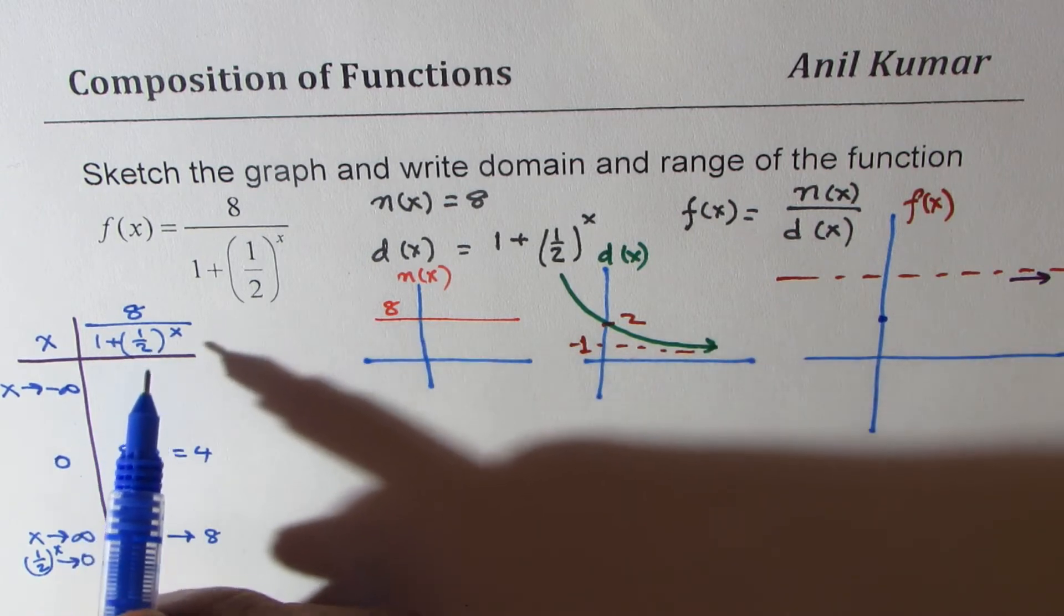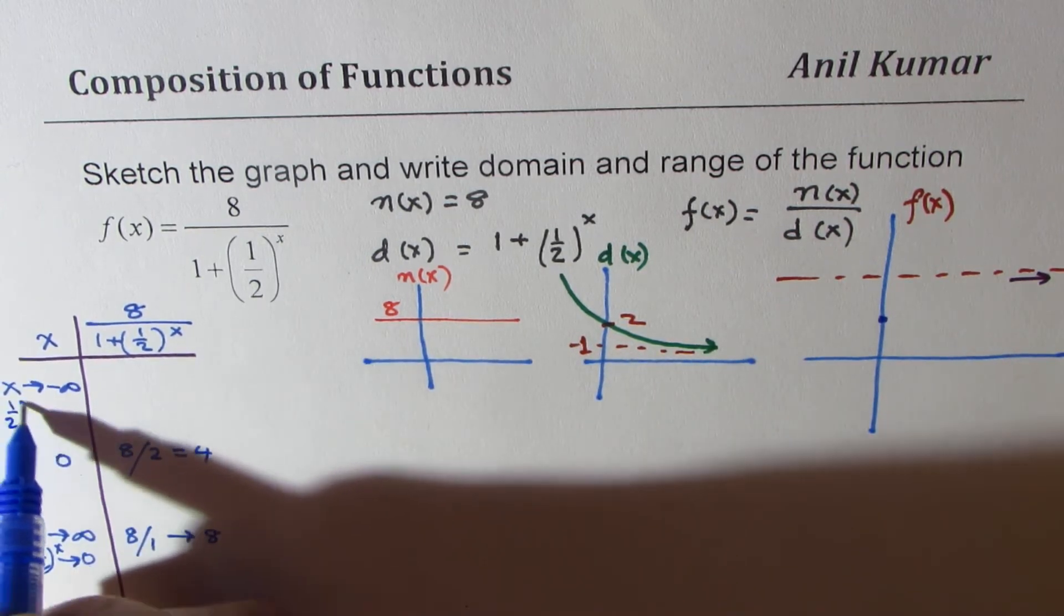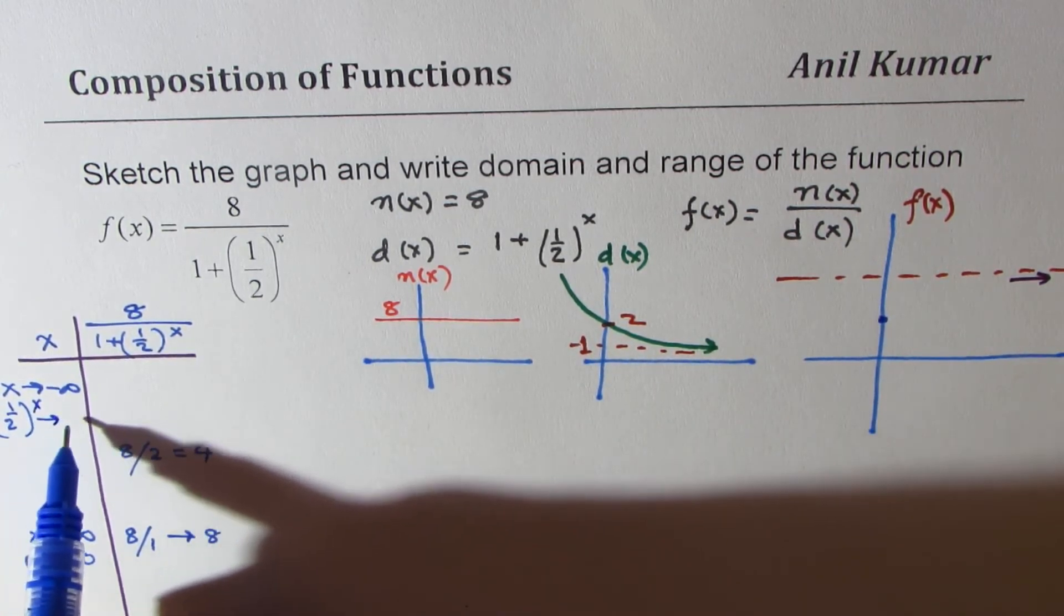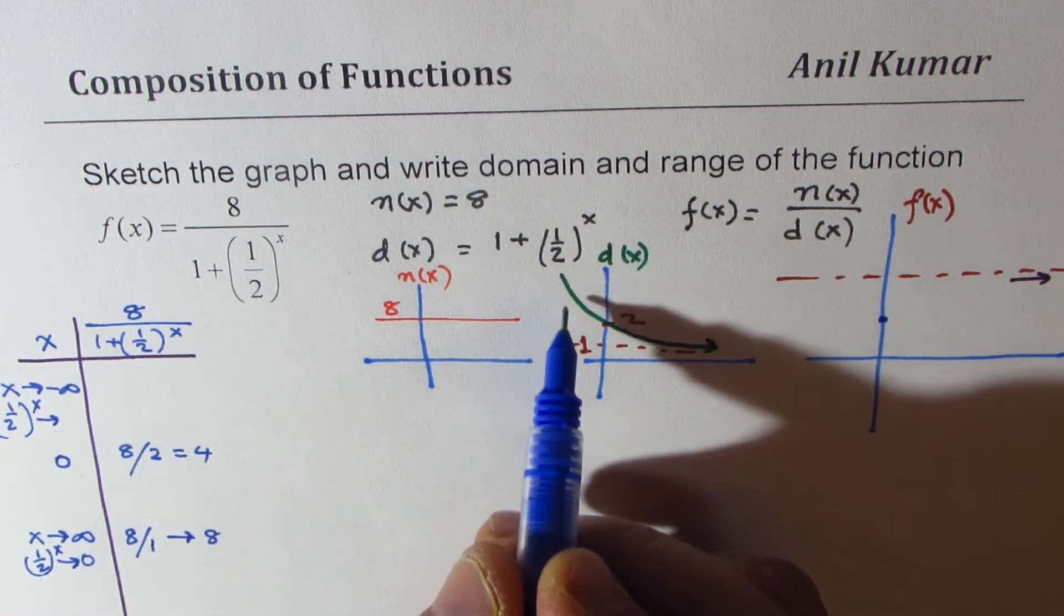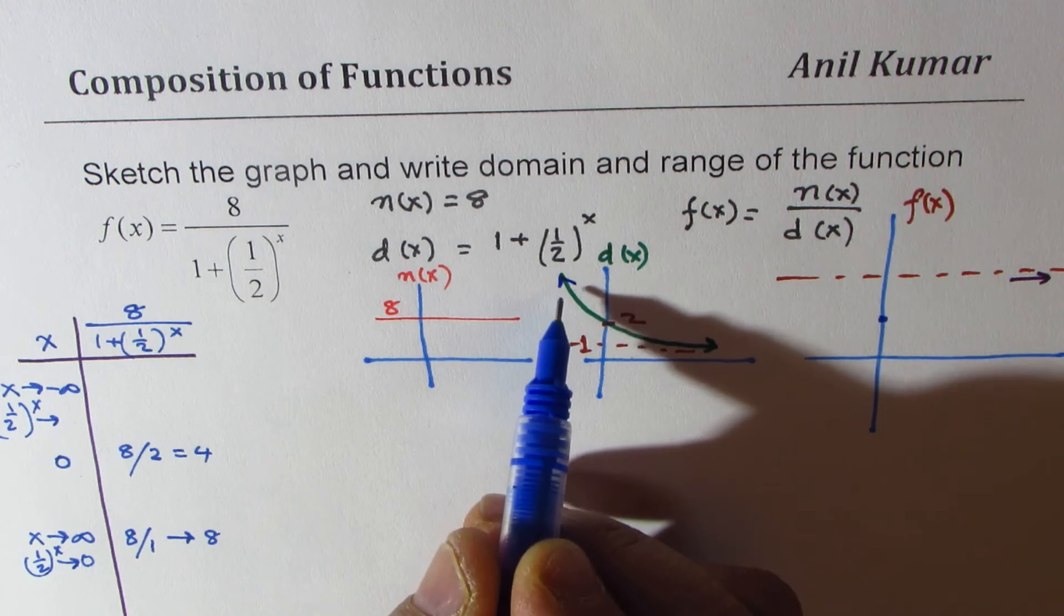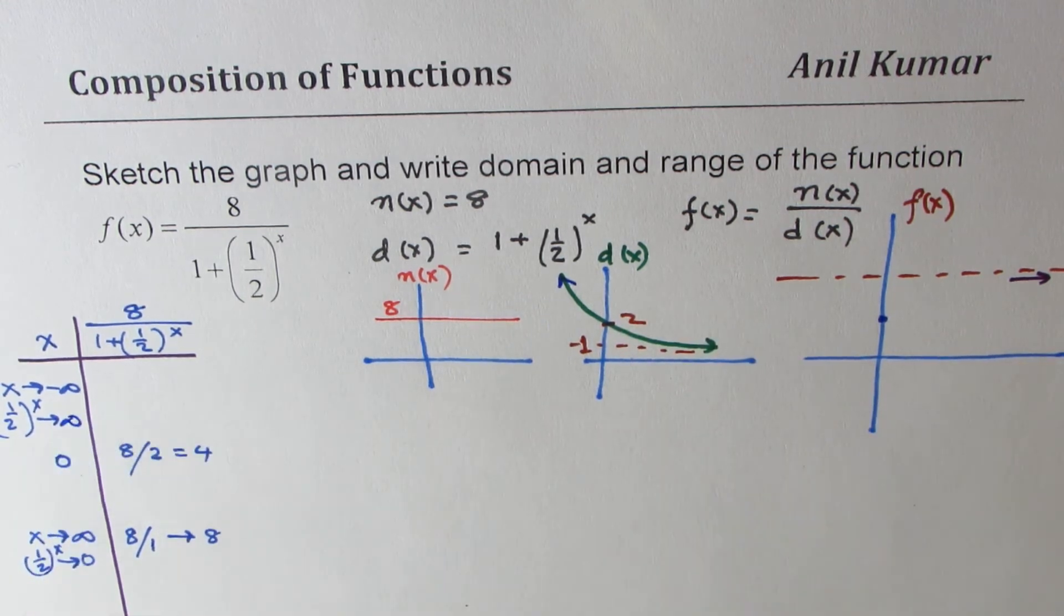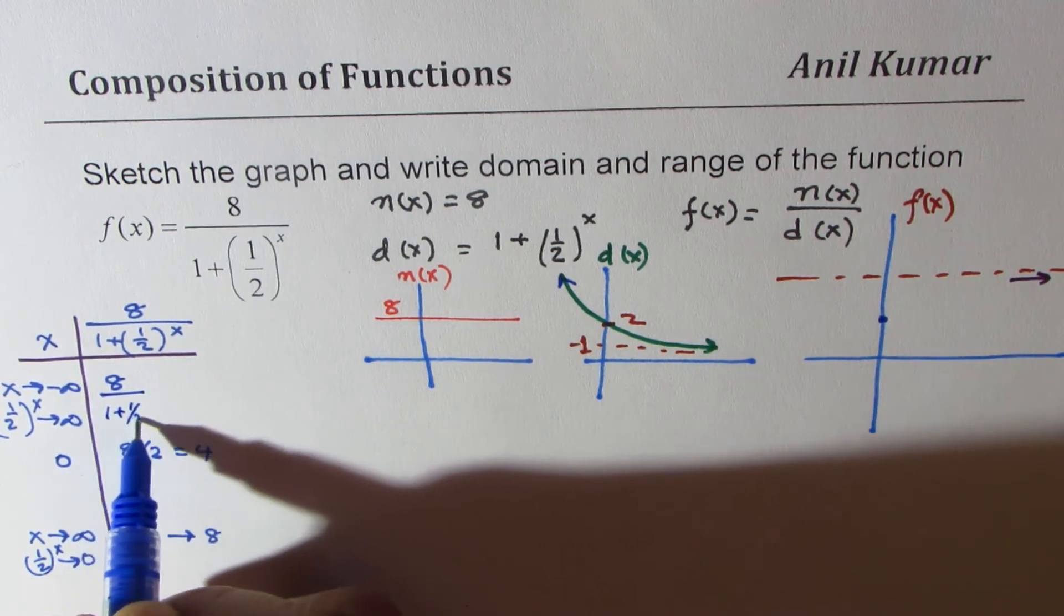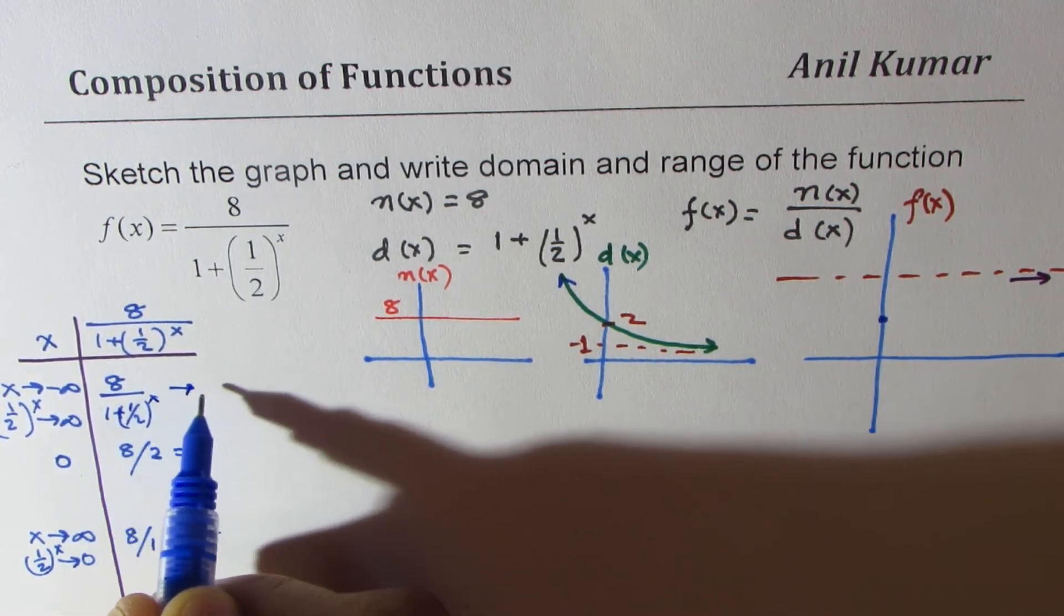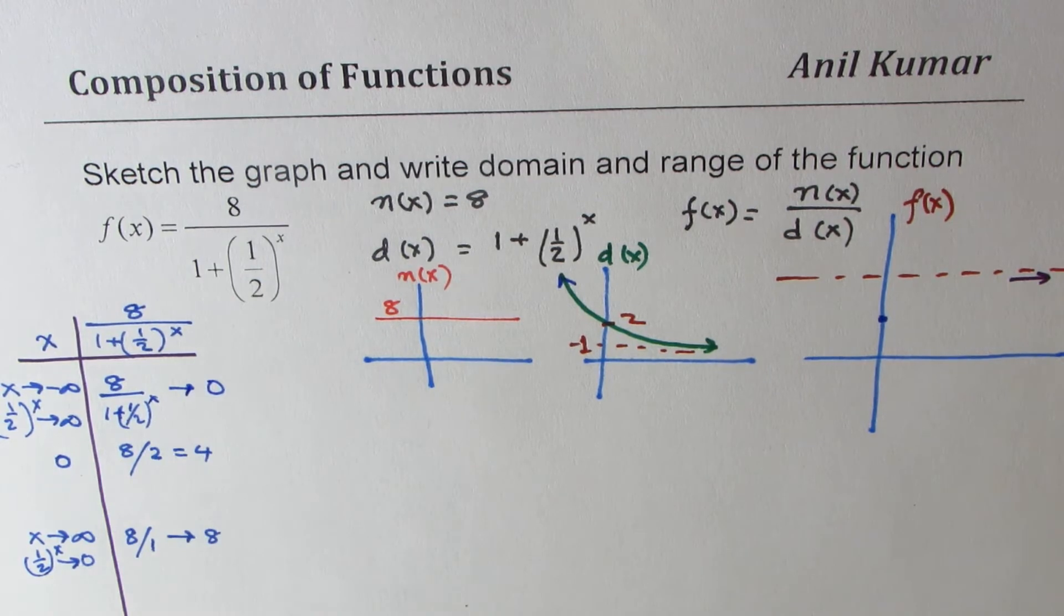In that case half to the power of x approaches a large value, approaching infinity. That means 8 divided by 1 plus half to the power of x will approach 0. So the other asymptote is going to be approaching 0.